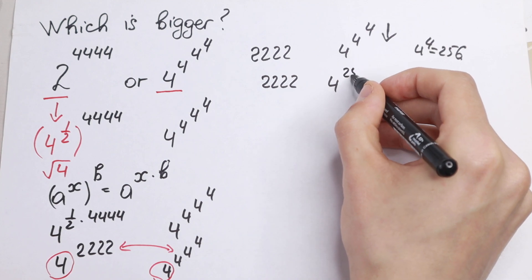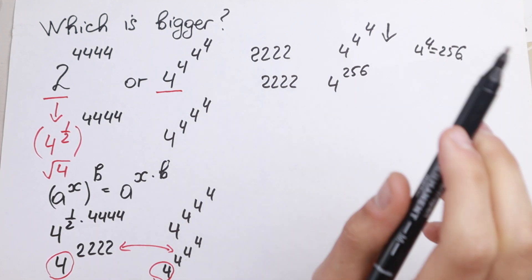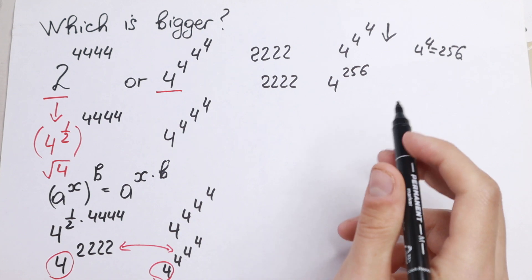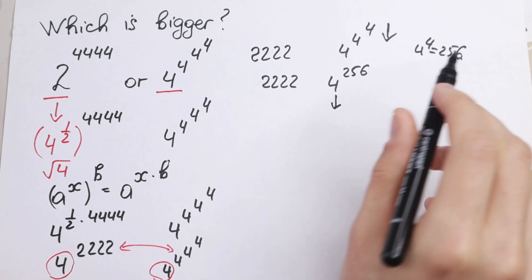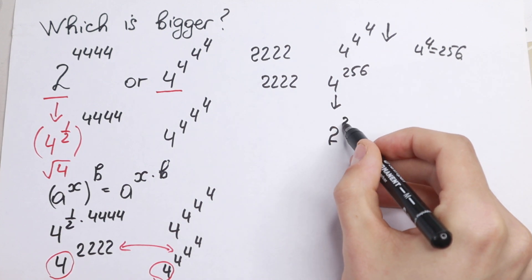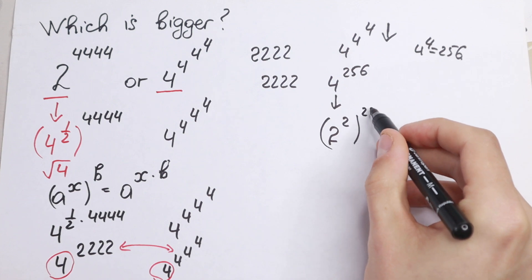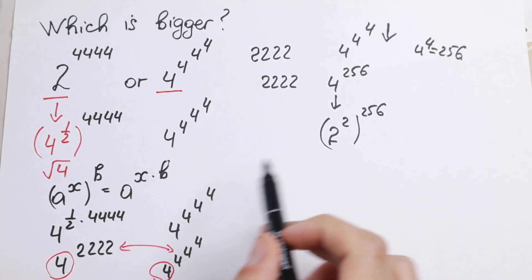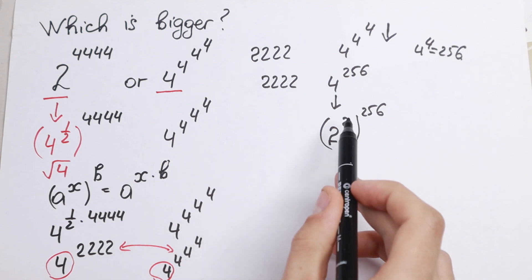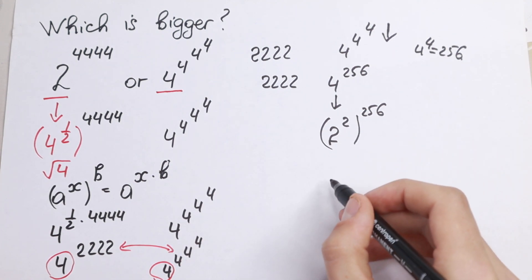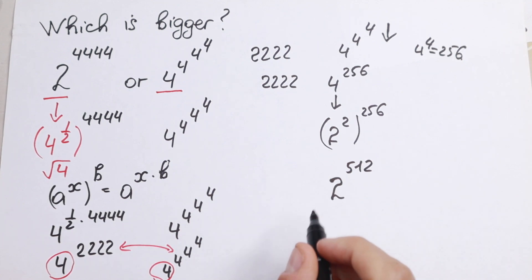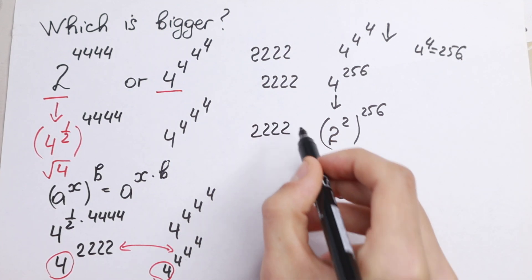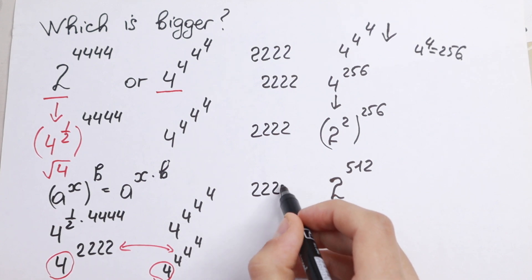So 4^4 equals 256. Now we compare these two numbers. Let's rewrite 4 as 2 squared — that will be more useful. So 2 squared, raised to the power 256. Applying the power rule, 2 squared to the 256th power equals 2 to the power 512. So the right side is 2 to the power 512. The left side remains 2,222.